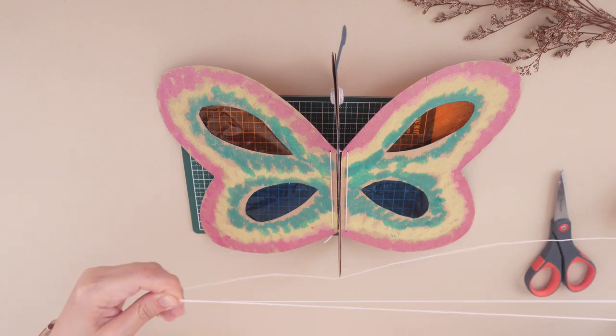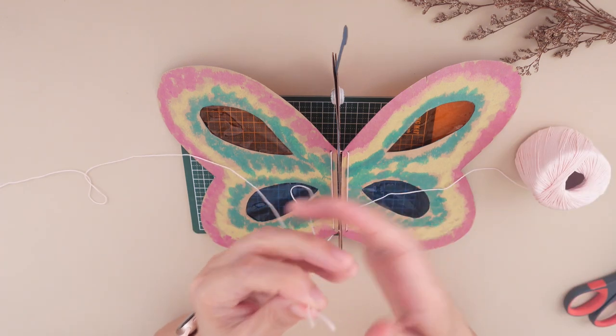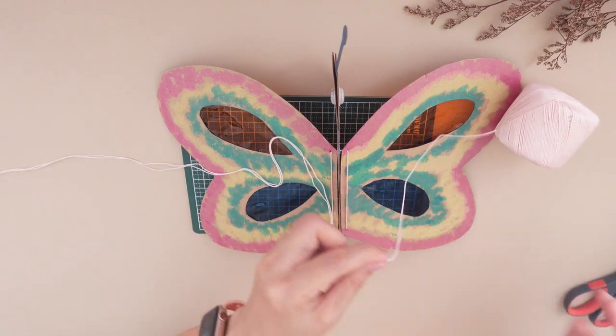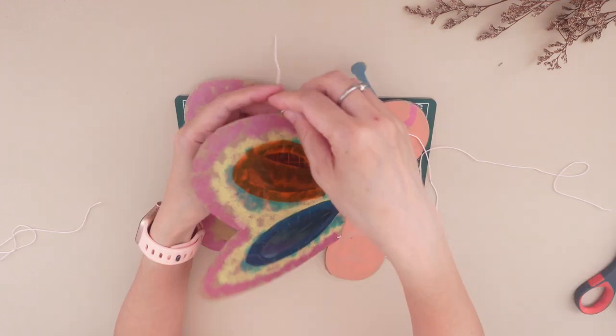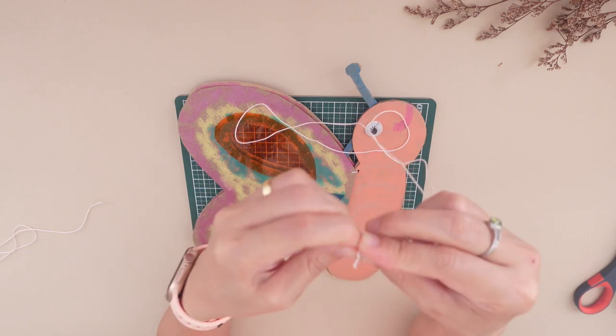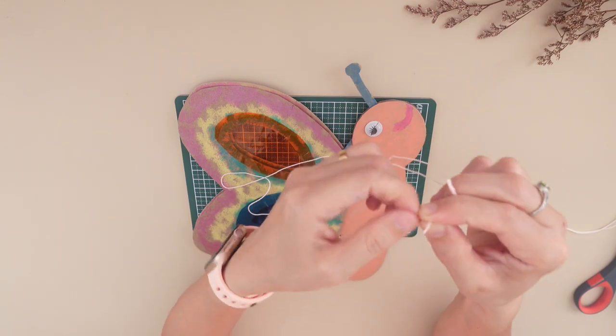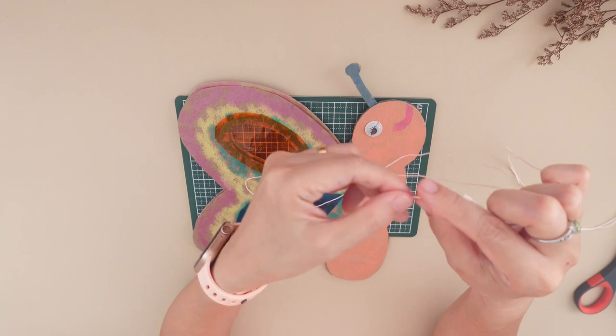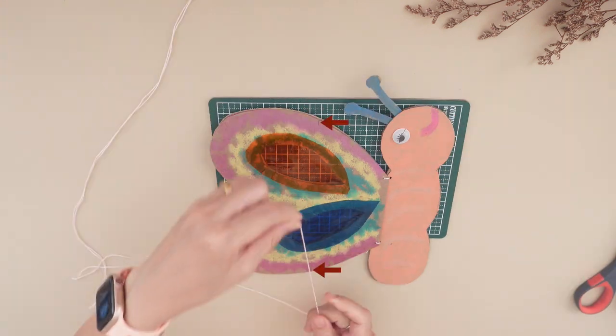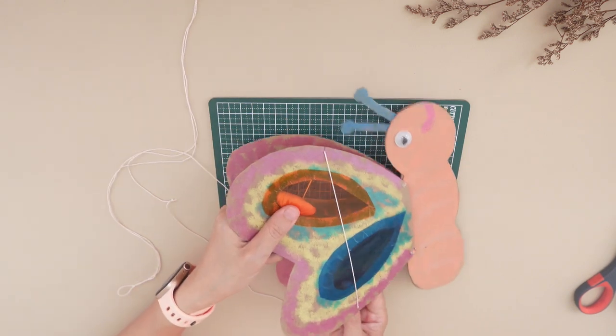Now take two pieces of 30 inches length of string. Tie the ends of each string and make sure that they have the same equal length.